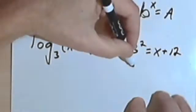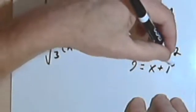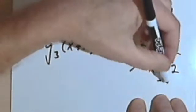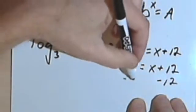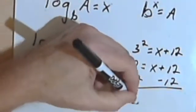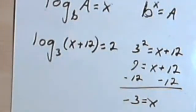3 squared is 9, so 9 equals x plus 12. If I subtract 12 from both sides, I'm going to find out that x is negative 3.